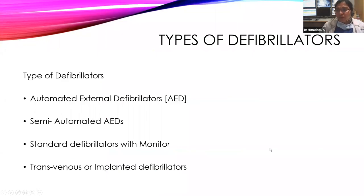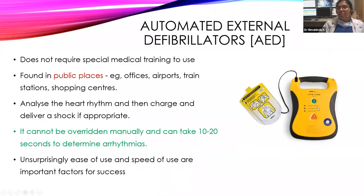Types of defibrillators: automated external defibrillator (AED), semi-automated AED, standard defibrillator with monitor, and transvenous or implanted defibrillator. The AED, seen in public places like airports, railway stations, and shopping malls, automatically detects arrhythmia, charges, and delivers shock — even a layperson can use it. It cannot be overridden manually and takes 10–20 seconds to analyze the rhythm.